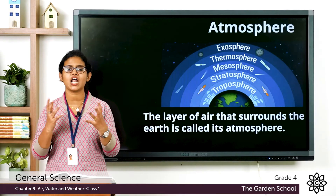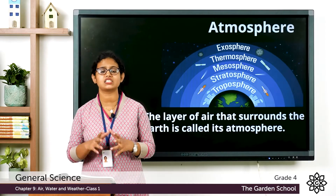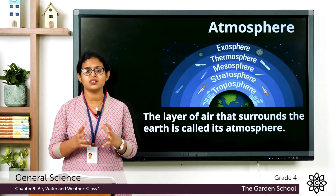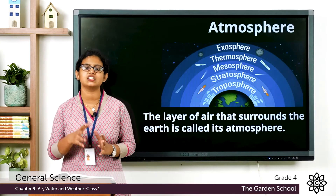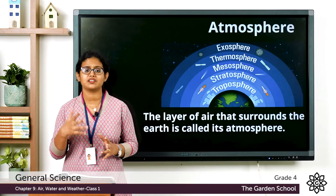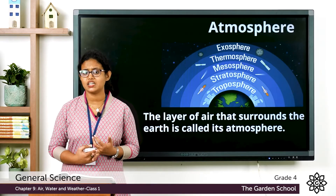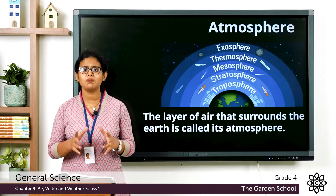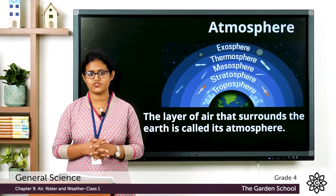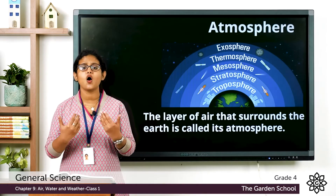Our Earth is surrounded by a layer of air, and the layer of air that surrounds the Earth we call it the atmosphere. We can say the blanket of air or gases that surrounds the Earth is called atmosphere. This air is a mixture of different gases like oxygen, nitrogen, carbon dioxide, etc. Even water vapor and dust are present in the air. This atmosphere is very important as it keeps us alive on Earth.